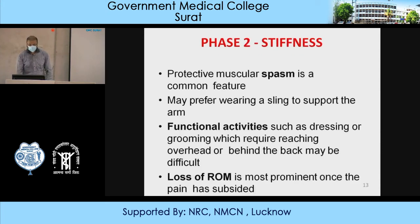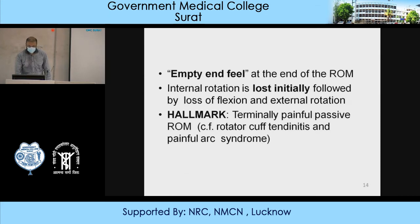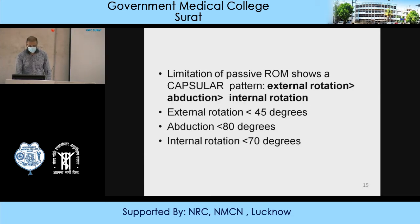In Phase 2 stiffness, protective muscle spasm is a common feature. The patient may prefer wearing a sling to support the arm. Functional activities such as dressing or grooming — which require reaching overhead or behind the back — may be difficult. Loss of range of movement is the most prominent finding. Internal rotation is lost initially, followed by loss of flexion and external rotation. Limitation of passive range of movement shows a capsular pattern: external rotation more than abduction and more than internal rotation. Specifically: external rotation less than 45°, abduction less than 80°, and internal rotation less than 70°.